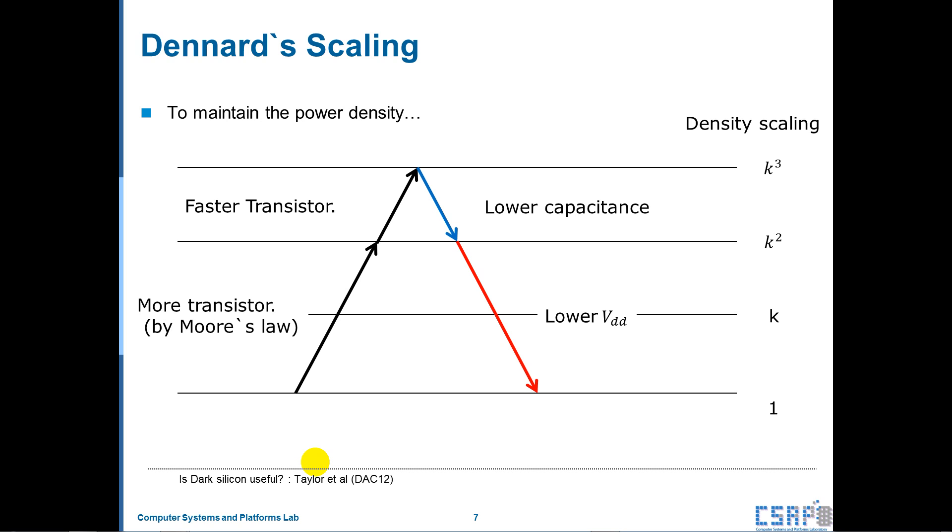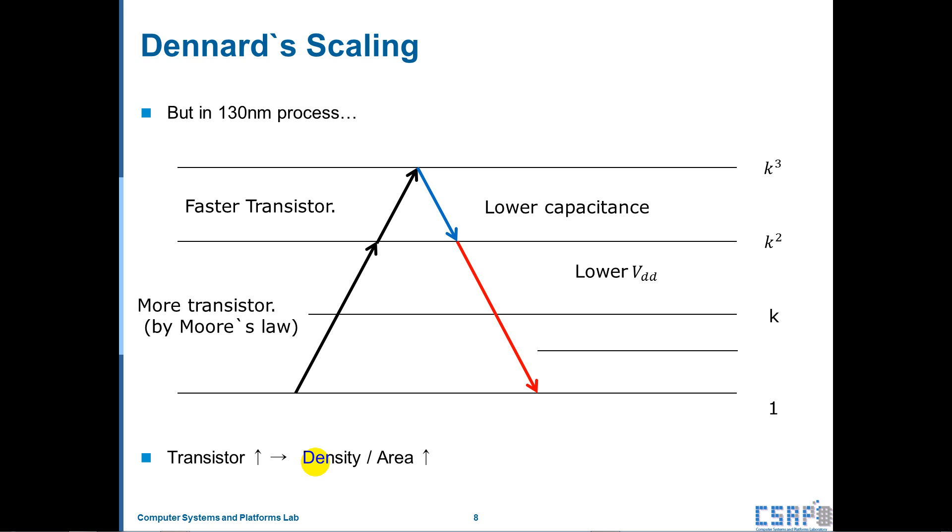So the drain voltage cannot be lower than before. So like this. As a result, the density factor does not remain constant. As a result, when we increase the number of transistors, the ratio between power density and area will also increase. That's bad effect for us. You can see this phenomenon in the 130nm process.